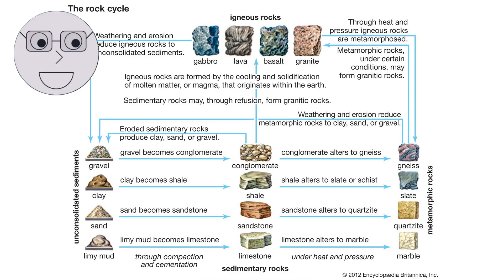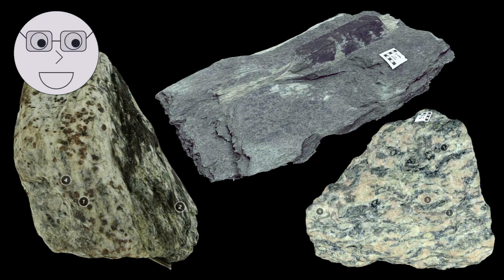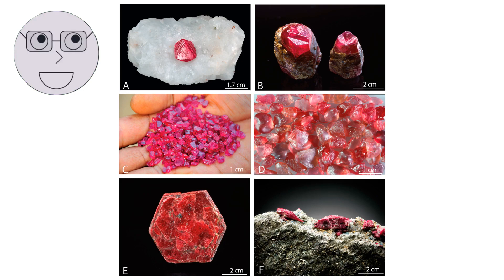The chemical composition of metamorphic rocks can also provide clues about the conditions under which they were formed. For example, the presence of certain minerals can indicate the temperature and pressure at which the rock was transformed. Metamorphic rocks can also contain valuable resources such as precious metals and gemstones. Understanding the chemistry of metamorphic rocks is essential for identifying and extracting these resources.